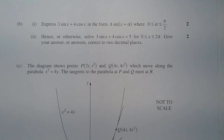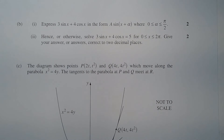Part 2. Hence or otherwise, solve 3 sin x + 4 cos x = 5 for x greater than or equal to 0 and less than or equal to 2π. Give your answer or answers correct to two decimal places.